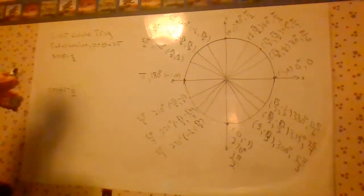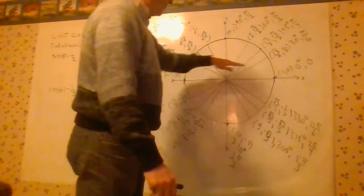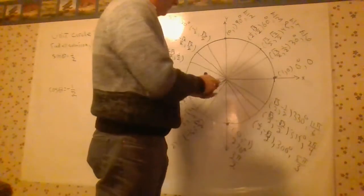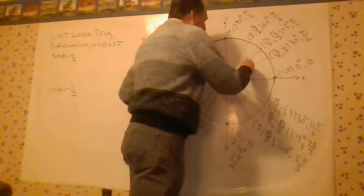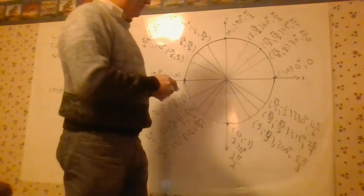This is Introduction to Unit Circle Trigonometry. This is what's called the unit circle. The radius is 1 in all these cases. In the standard trigonometric orientation,